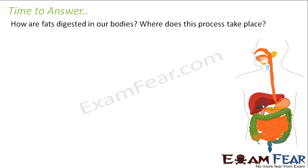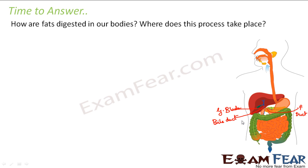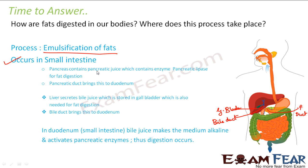Bile juice from the gallbladder comes through the bile duct into the duodenum — this blue colored line is the bile duct, and this green colored line is the pancreatic duct. They all meet in the duodenum, where the bile juice makes the acidic food alkaline. Once the medium is alkaline, the pancreatic enzymes start acting. The pancreatic enzyme which helps in digestion of fat is called pancreatic lipase, which acts on fat and digests them. This process takes place in the duodenum of the small intestine and is known as emulsification of fats.